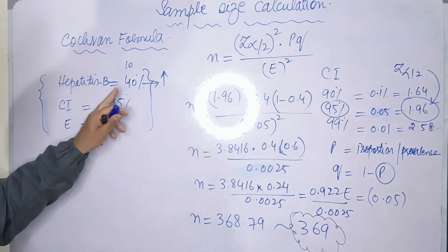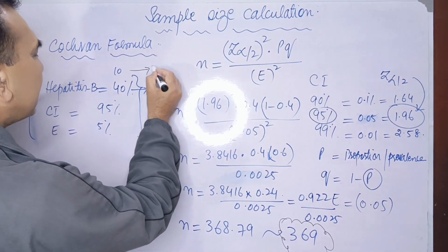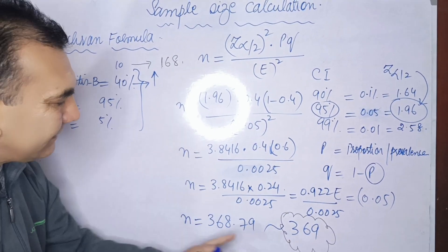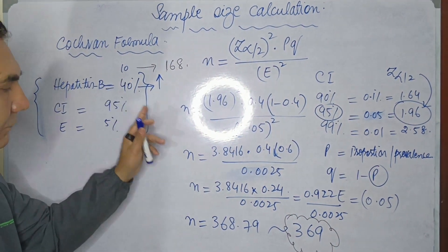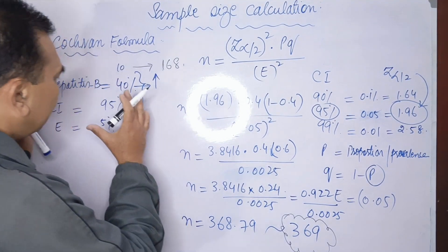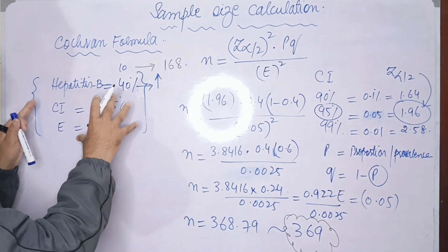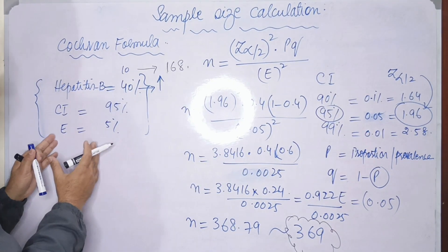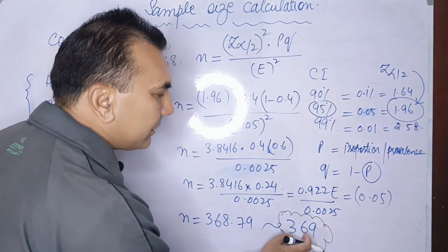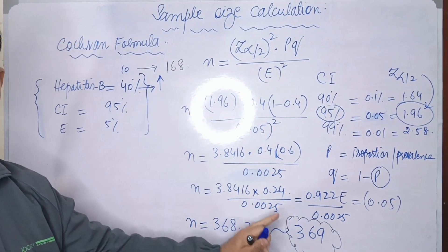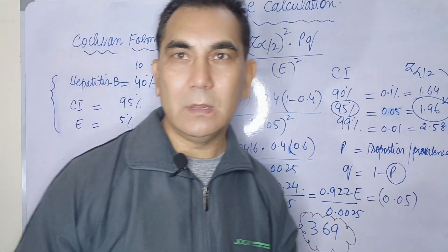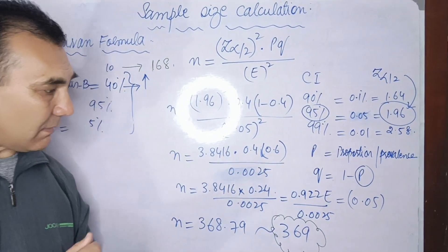Notice: when the prevalence was 10%, the sample size was around 138. When I increased the prevalence from 10% to 40%, the sample size increased to 369. So for a study where hepatitis B prevalence is 40%, at 95% confidence with a 5% bound of error, you need at least 369 in your sample size to conduct this survey.